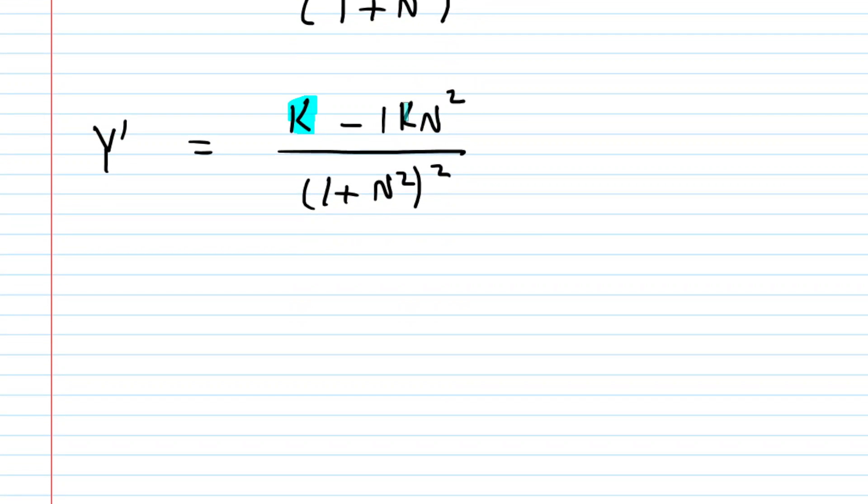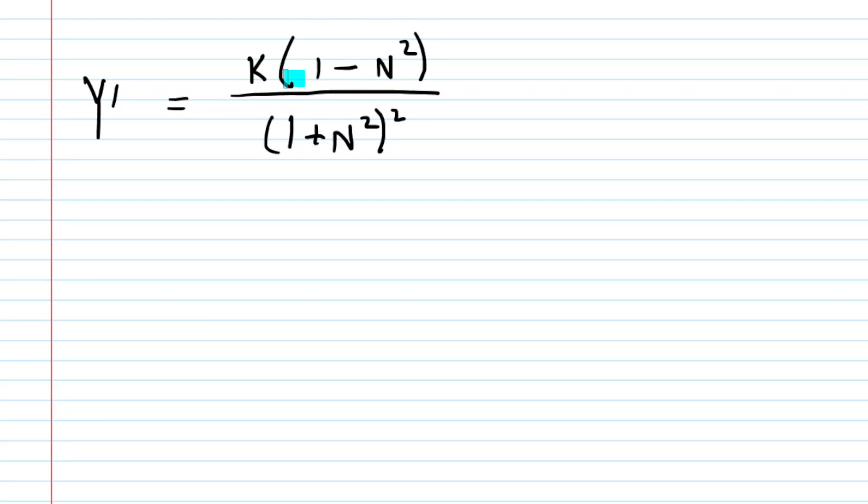In the numerator, we have a greatest common factor of k. We have k multiplied by the quantity 1 minus N squared. This can factor. 1 minus N squared is the difference of two perfect squares. So that would factor as 1 plus N times 1 minus N. This is the final form of the first derivative that we need to help us maximize the value of the yield.